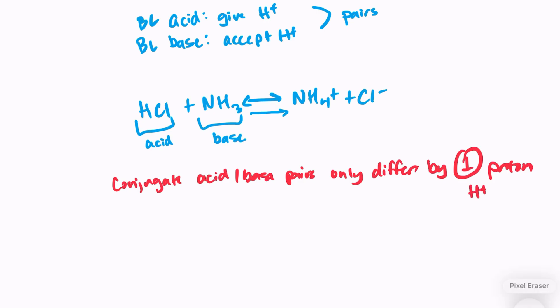So if we're looking at the reaction that we looked at the other day, HCl, let's look at that first. It's our acid. Does it differ by one proton from NH4+ or Cl-? Well, if we compare it to NH4+, it's completely different. But if we look at Cl-, the difference between HCl and Cl- is one proton. So that's going to be one of our conjugate acid-base pairs.